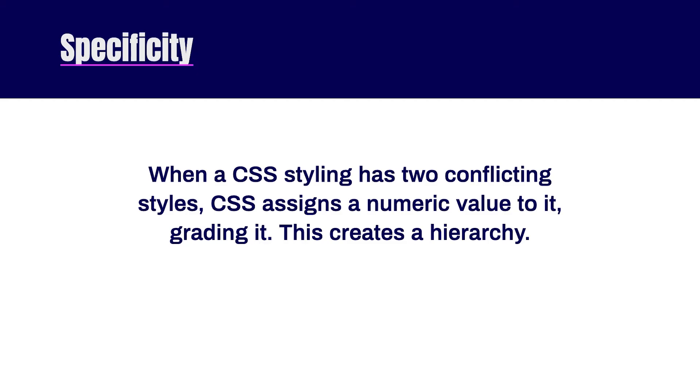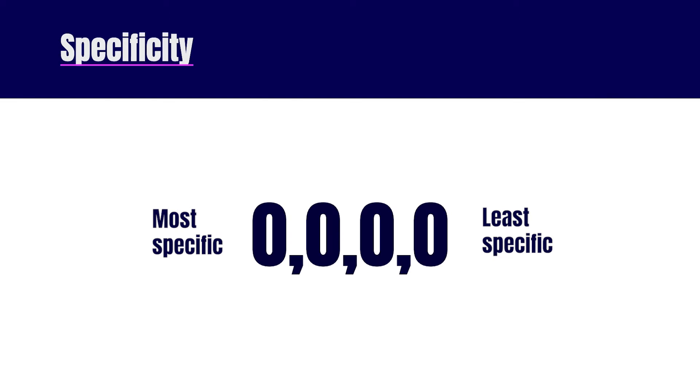Alright, so specificity is when a CSS styling has two conflicting styles. CSS is going to assign a number value to it, grading it, and this essentially creates a hierarchy, allowing one style to win and be applied. So think of specificity as four numbers. Starting from the right, we have element selectors. So that's when you're targeting all H1s or all divs.